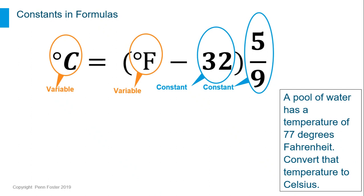If you have water with a temperature of 77 degrees Fahrenheit, you replace the F variable with that value. You end up with 77 minus 32 times 5 ninths and can solve. No matter what the temperature is, the constants 32 and 5 ninths don't change.